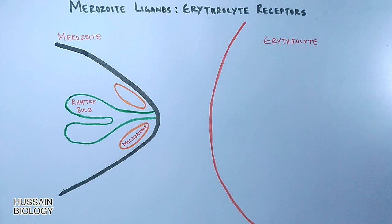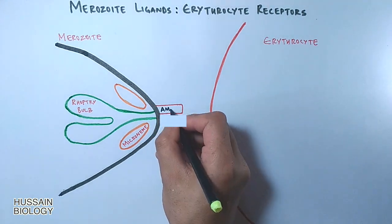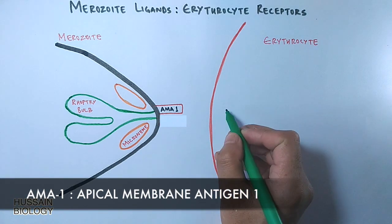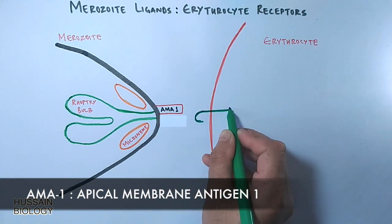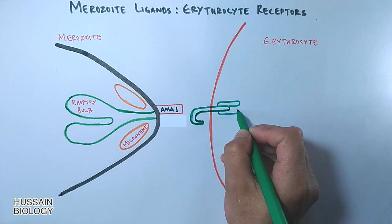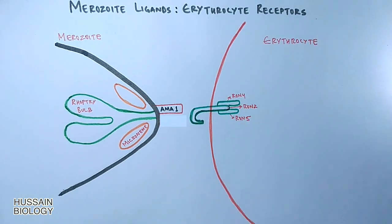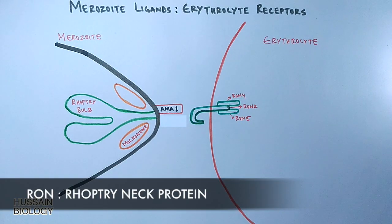From rhoptry proteins, the merozoite has a ligand named AMA1, apical membrane antigen 1. And on the RBC side we have receptors for this ligand named as RON complex, rhoptry neck protein.